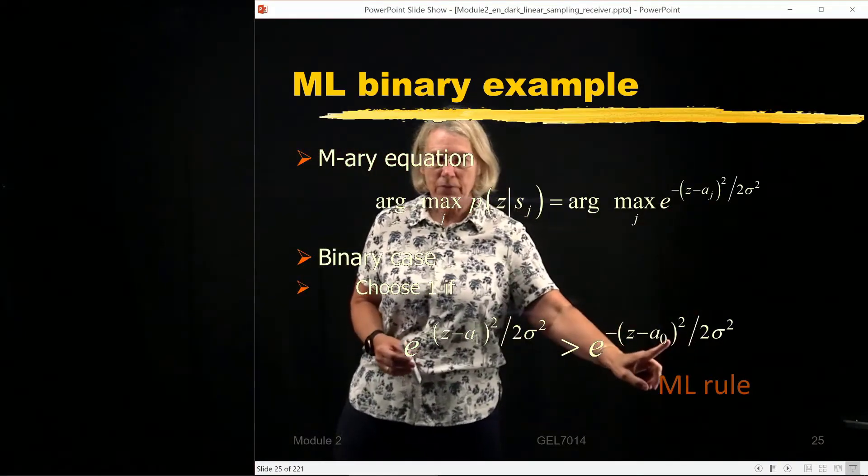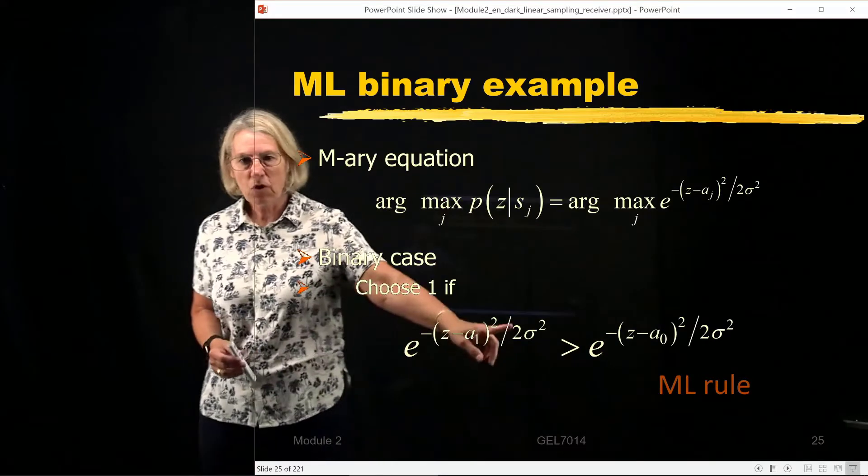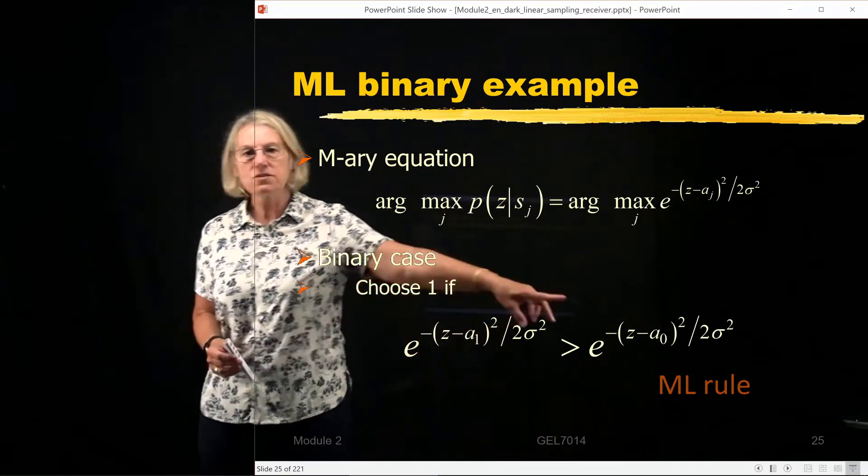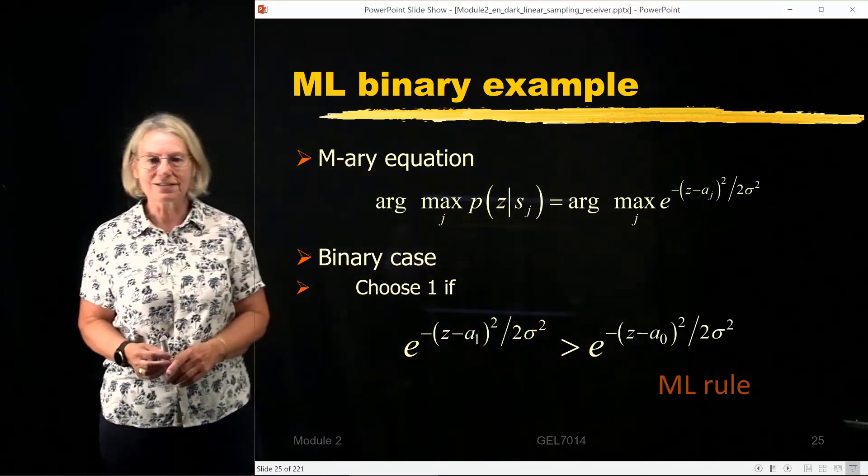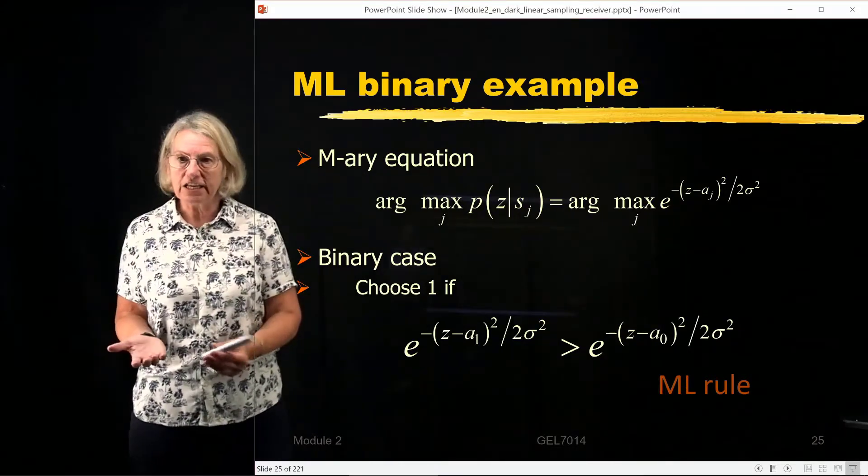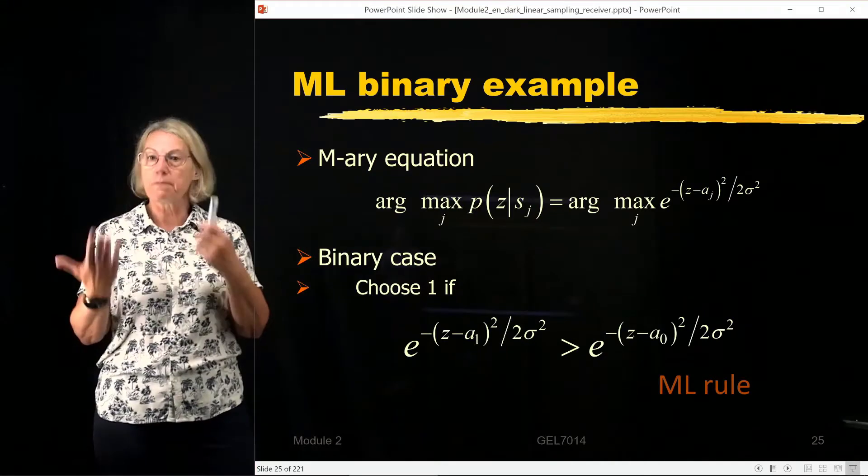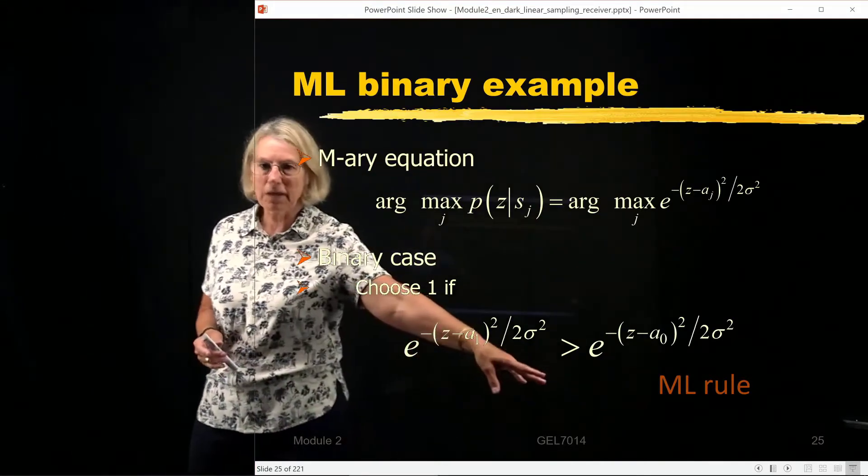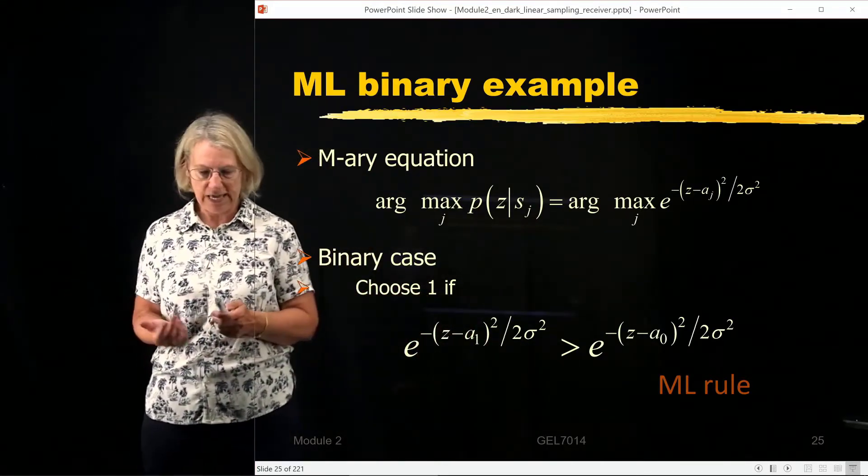So if using 1 gives me a larger value than using 0, then I will choose 1. That would be a more likely choice. So I'm maximizing the likelihood. This is known as the maximum likelihood rule in the binary case.